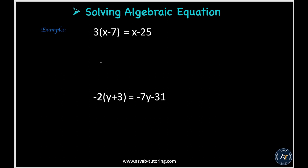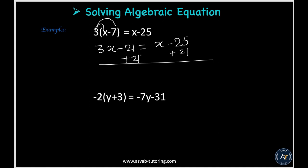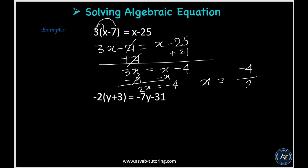Here is another type of algebraic equation: if you have parentheses, you need to simplify them first. You get 3x minus 3 times 7 equals 21, so the equation becomes 3x minus 21 equal to x minus 25. Add both sides by 21 — the 21s cancel — giving 3x equal to x minus 4. Subtract x from both sides: 2x equals negative 4, so x equals negative 2.